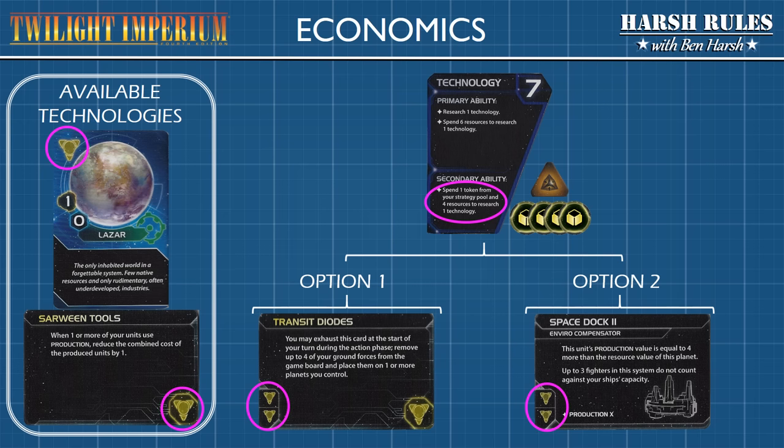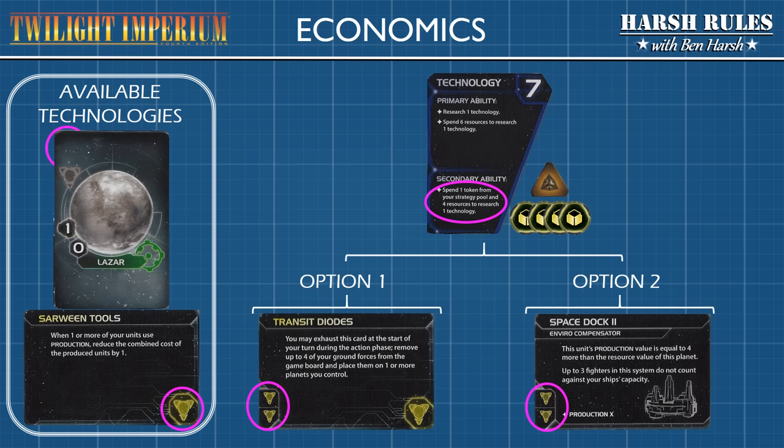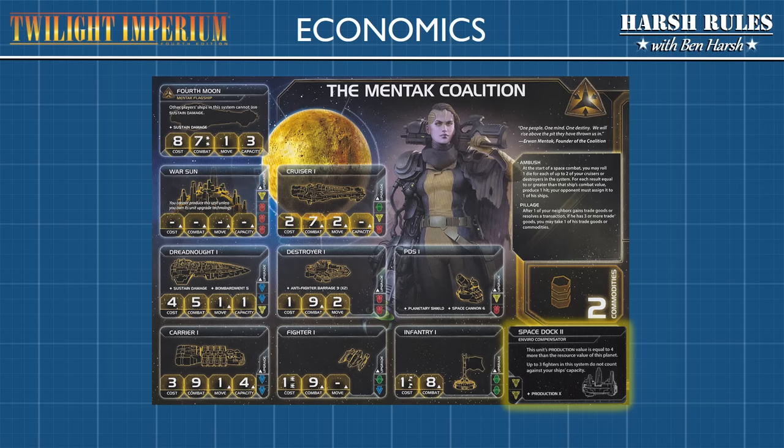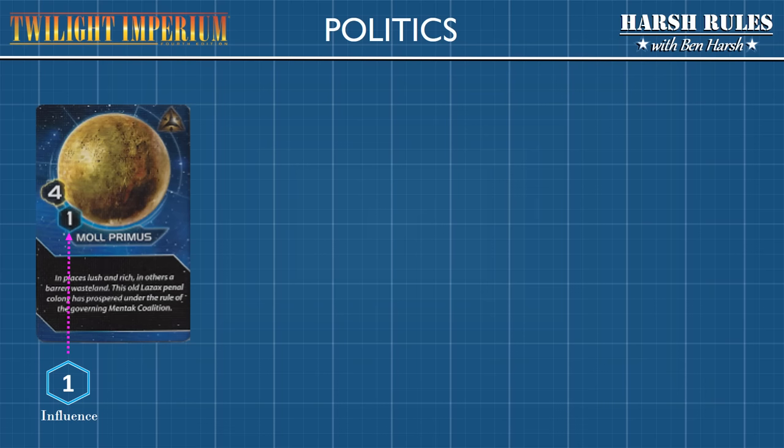The Mintac player announces they are going to research the unit upgrade for Space Dock 2. To accomplish the technological breakthrough, the Mintac player exhausts the planet card for Lazar and utilizes the current general technology learned from Sarween Tools. The unit upgrade card for Space Dock 2 is placed directly on the faction sheet over the Space Dock area.